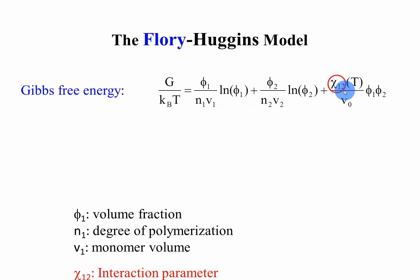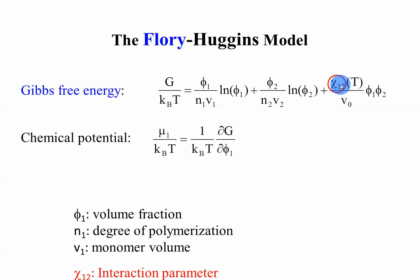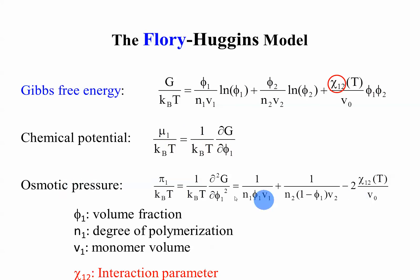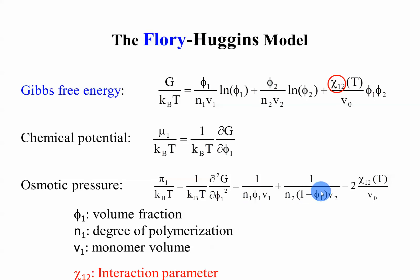Chi is the so-called Flory-Huggins interaction parameter. It controls interactions between polymer 1 and polymer 2, or polymer and solvent. The first derivative of the Gibbs free energy with respect to composition is called the chemical potential, while the second derivative is referred to as the osmotic pressure. You take the second derivative twice with respect to V1. I think most people are familiar with the Flory-Huggins model — this is just a brief review. I will not use too many equations, but at least one or two slides.